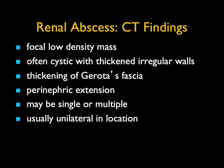Abscesses are interesting — they are focal low-density masses, and we used to call them lobar nephronia. They're often cystic with thickened walls. Importantly, abscesses can simulate necrotic tumors and look identical. You see stranding in the peri- and pararenal space through Gerota's fascia. Certain infections can have extensive perinephric extension. Abscesses are typically solitary but can be multiple, usually unilateral but not always. Pyelonephritis not uncommonly can be bilateral.